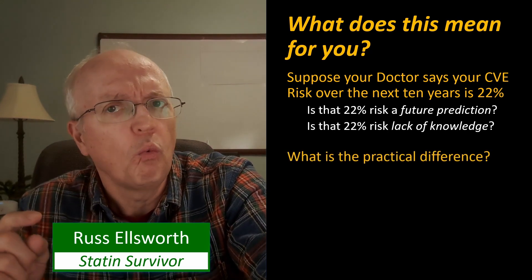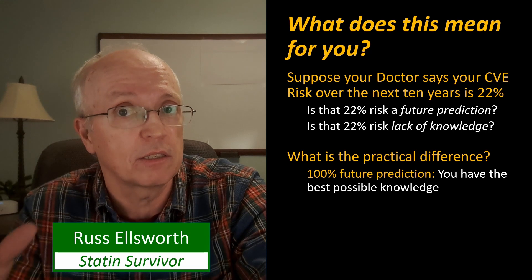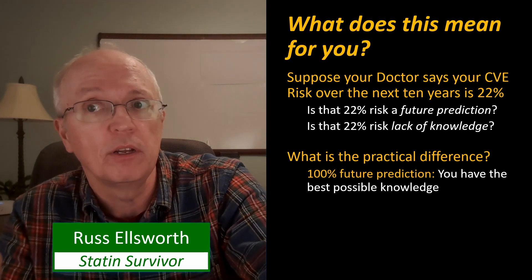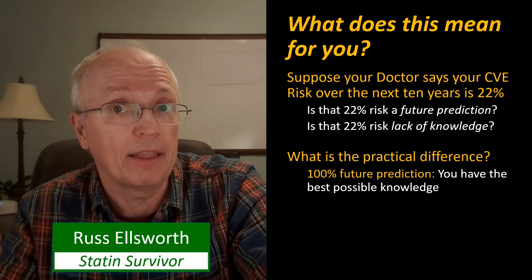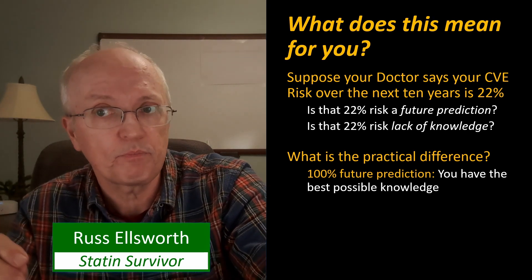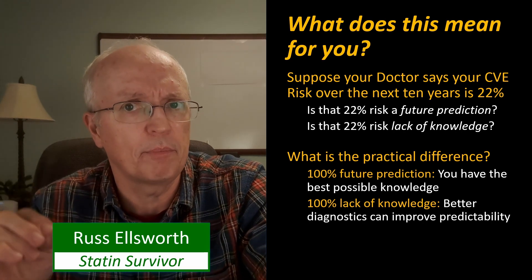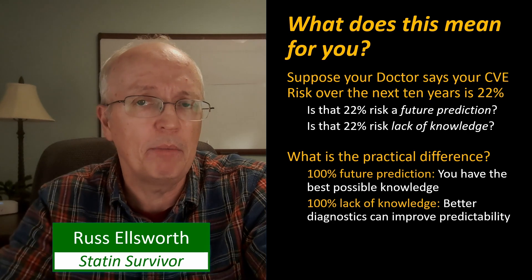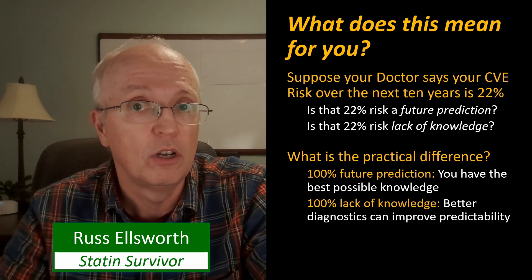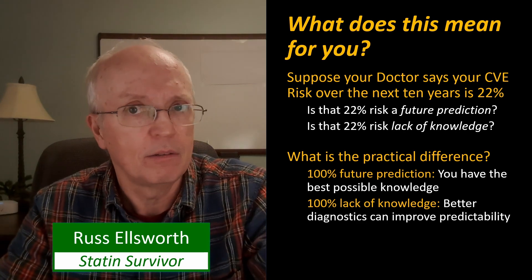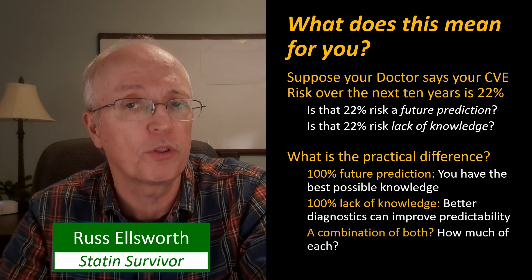What's the practical difference? If 100% of that value is a future prediction — it's totally random and this is the best we can do — we have to accept there's an element of randomness. But if it's 100% a lack-of-knowledge measure, then better diagnostics can improve the predictability. If we studied more and learned more, maybe we could say your probability of having a cardiovascular event is either zero or 100%. If we had perfect knowledge, maybe we would know that. So is it a combination of both? That journal article suggested it probably is, and that's what we have to consider.